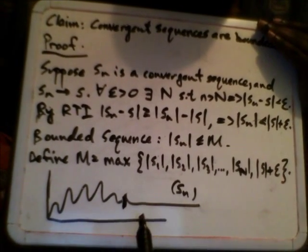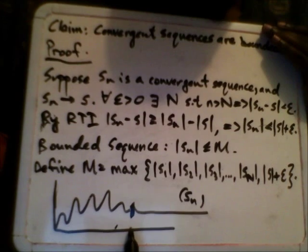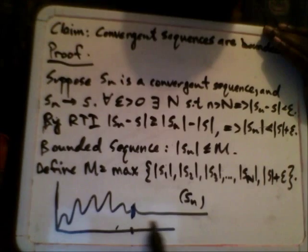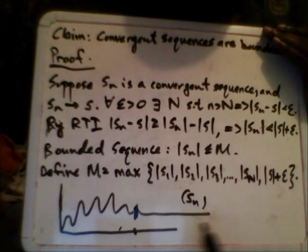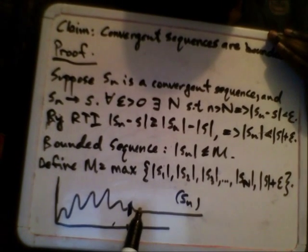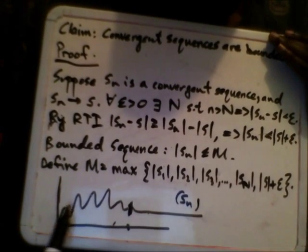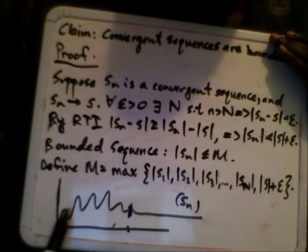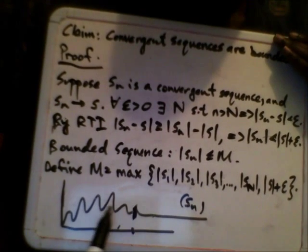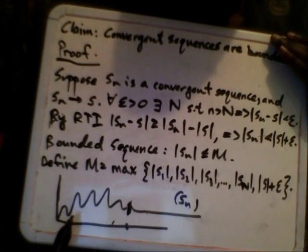Small n represents the index numbers, and when the index is greater than some certain point on the x-axis — when it gets far enough along — the sequence starts leveling off to a single value. But it doesn't necessarily mean that if we pick |S| plus epsilon as the boundary, it will contain the entire sequence. It may miss some earlier parts that go higher.